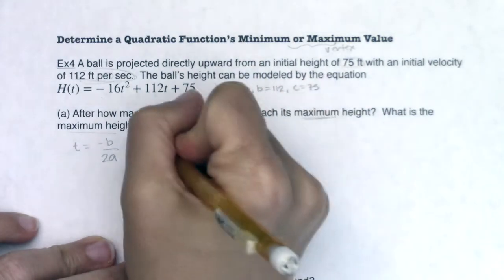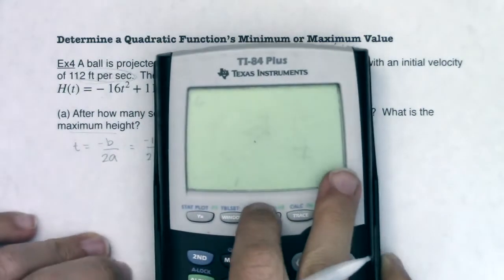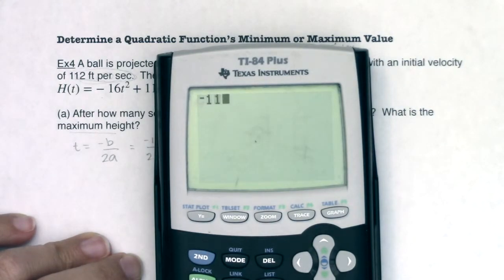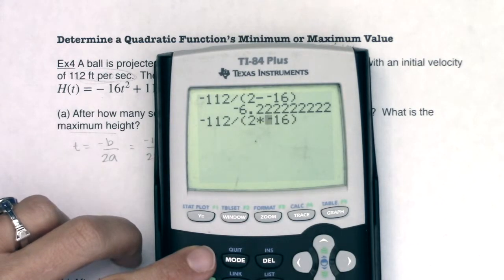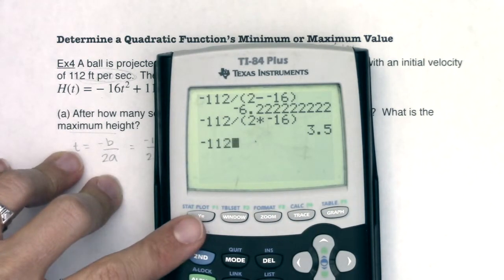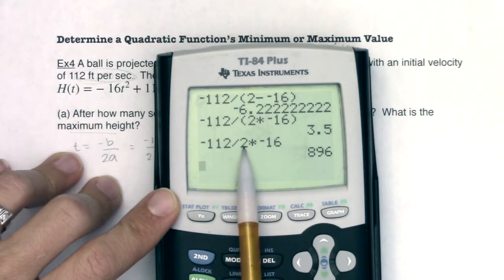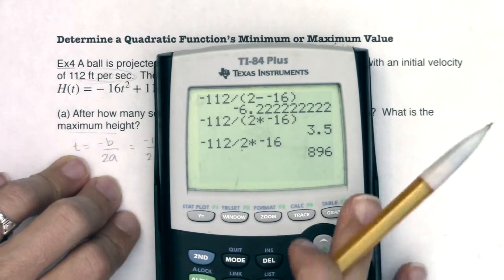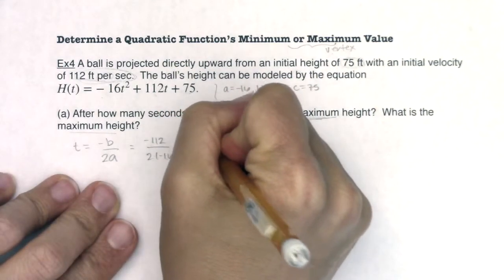As I start to work this, negative b would be negative 112 divided by 2 times negative 16. I need to put the denominator in parentheses — without parentheses you'll get a different number. It's not 896; it's 3.5. The problem without parentheses is it takes 112, divides it by 2, and then multiplies the entire thing by negative 16, when you actually want to divide by negative 16. So ultimately, t equals 3.5 seconds.